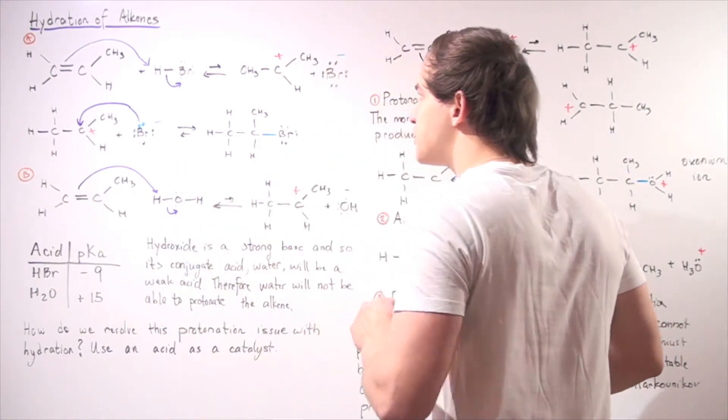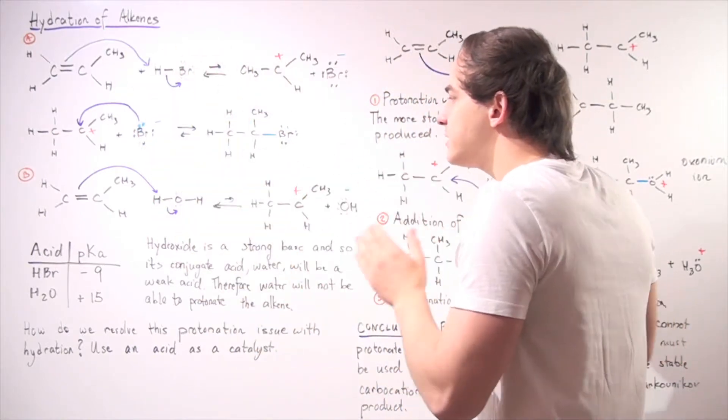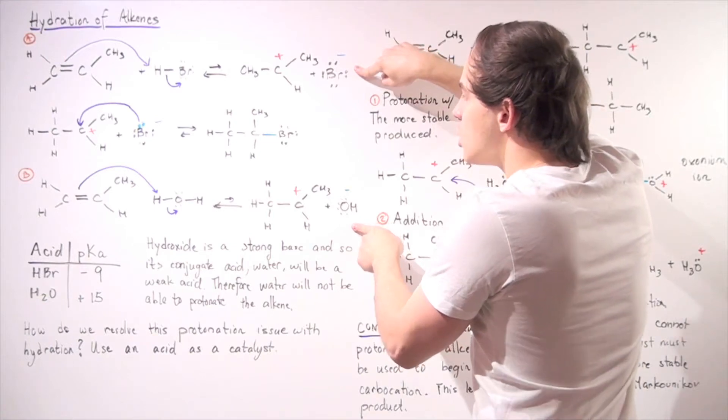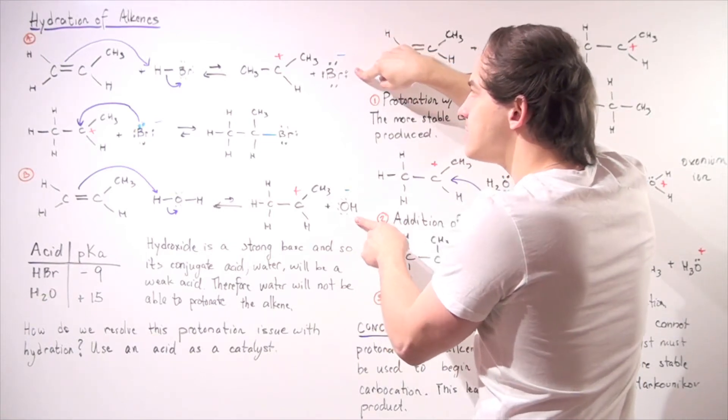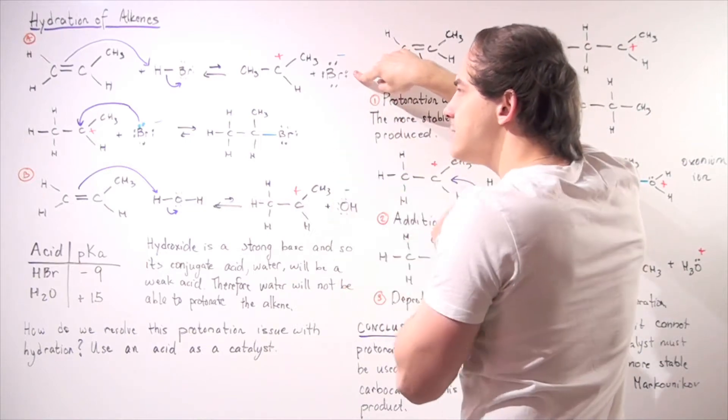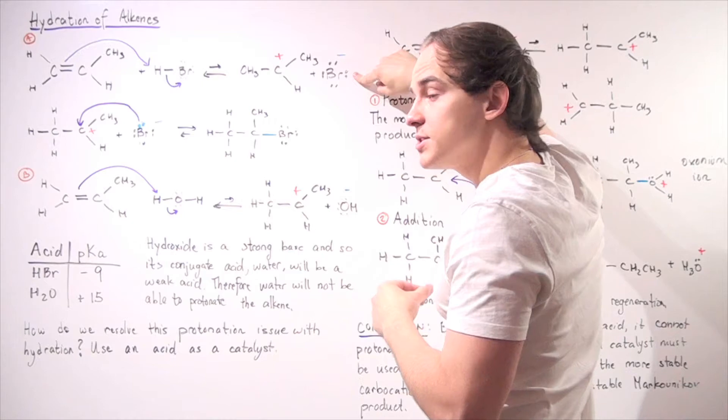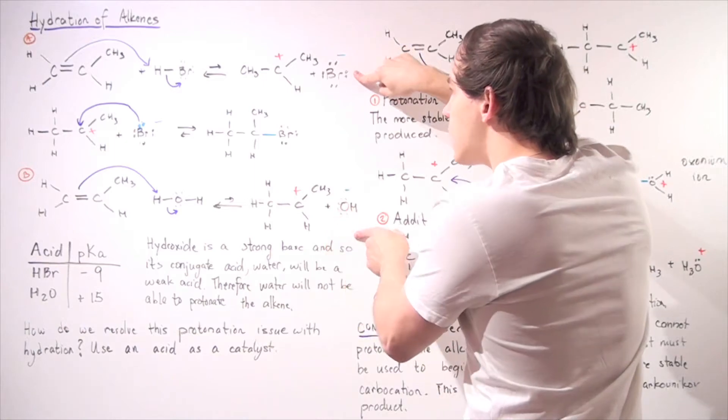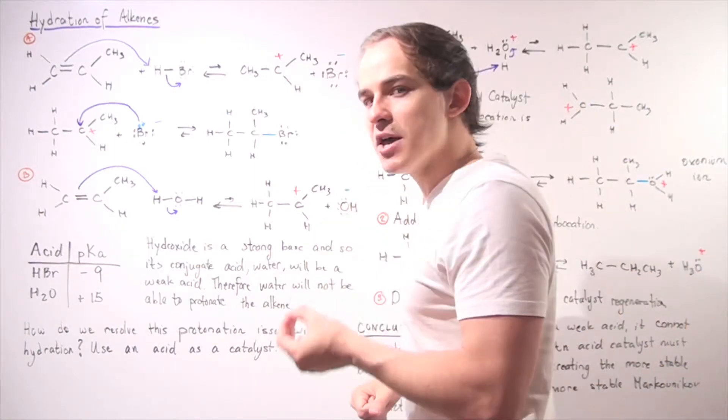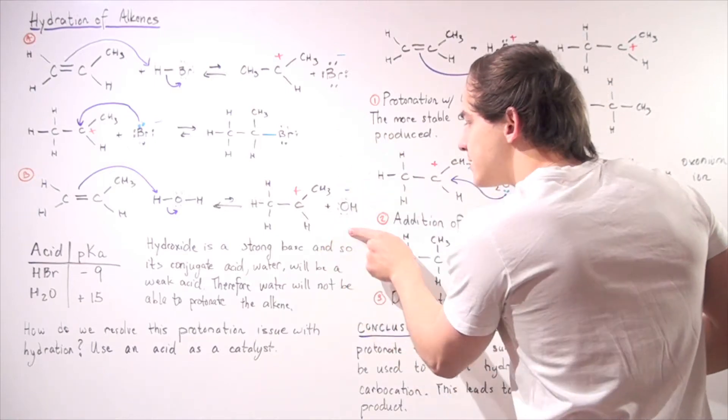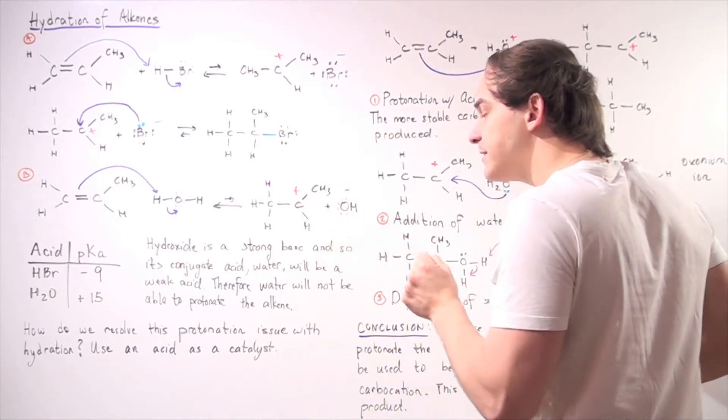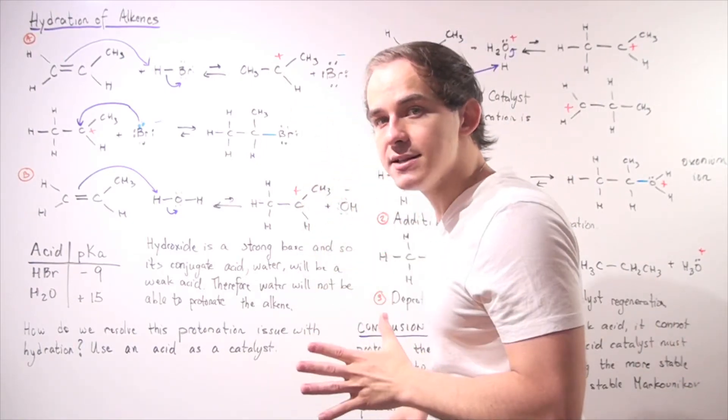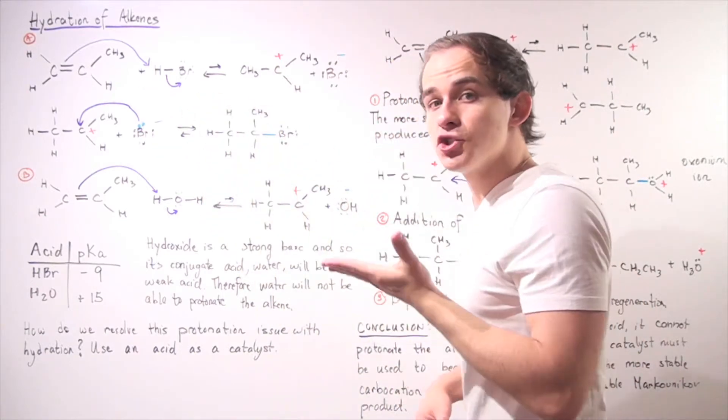Now, let's compare this protonation step with this protonation step. Notice that these act as acids and these are our bases. So let's see which one of these bases is a better base. Remember, the stronger the base, the weaker its conjugate acid. The weaker the base, the stronger its conjugate acid. So let's look at our bromine and let's look at our hydroxide. So hydroxide is a much better base than bromine. In fact, hydroxide is a very good base and that means water is a very weak acid. Likewise, bromine is a very weak base and that means HBr is a very strong acid.